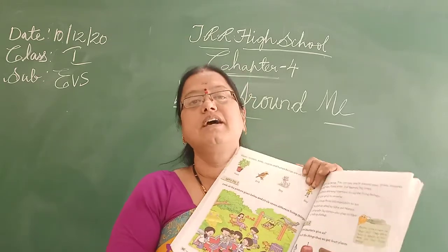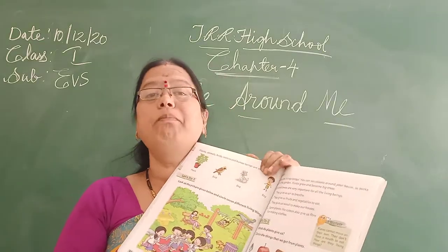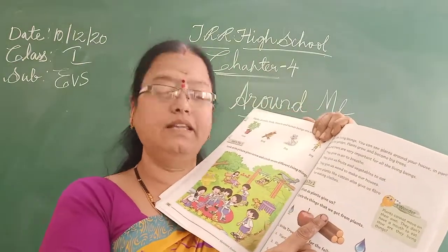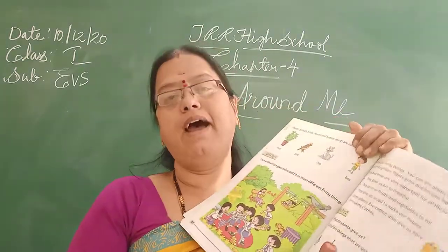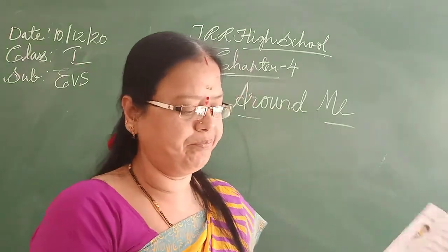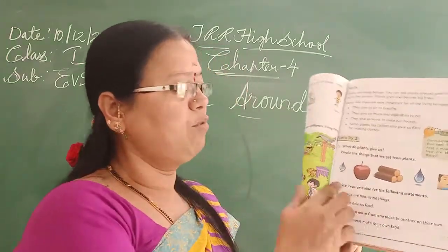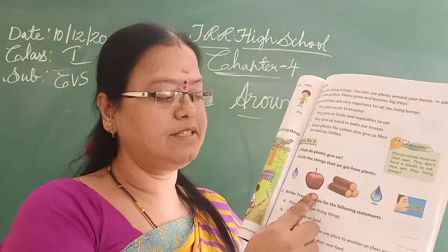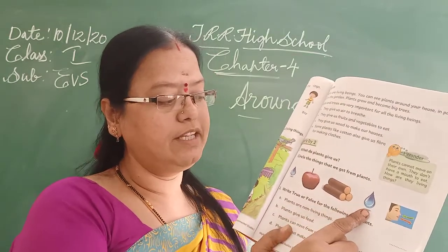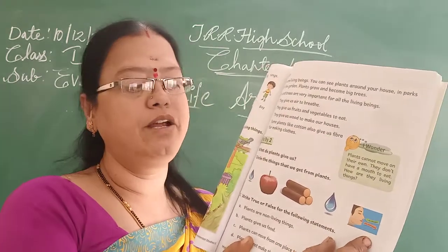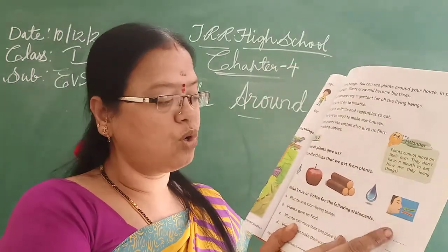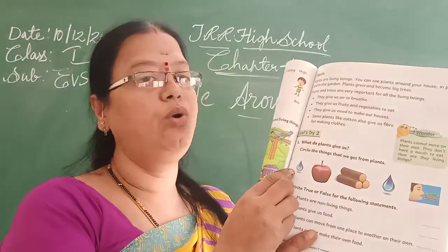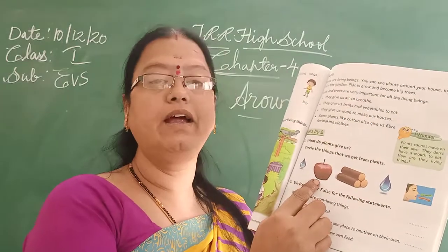What do plants give us? See here and circle the things that we get from plants. See the pictures. What is this? This is a water drop, this is an apple, and this is wood. Circle the things we get from plants.